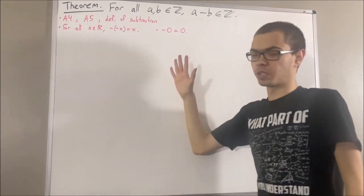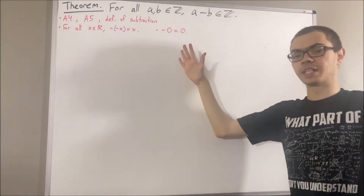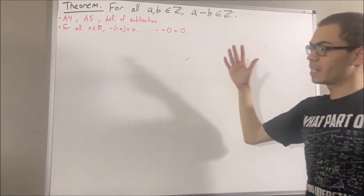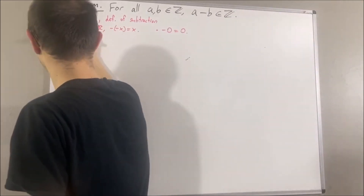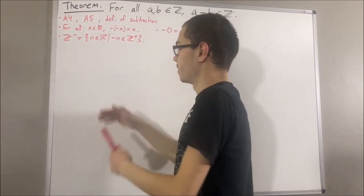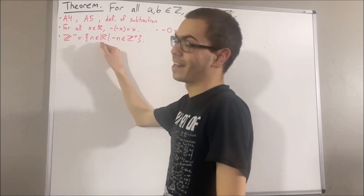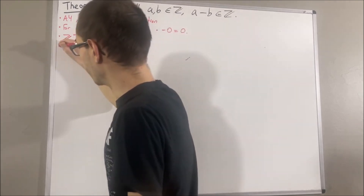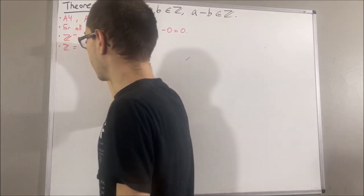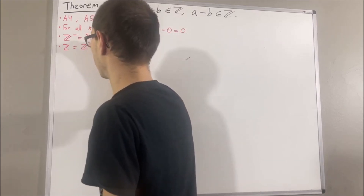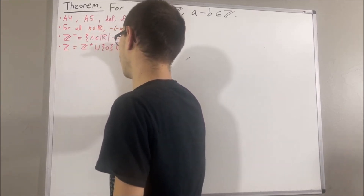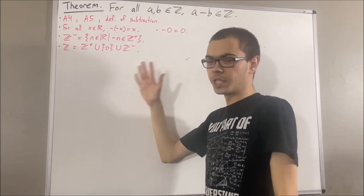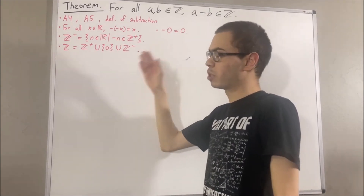In our real number system, we have defined the positive integers as a subset of the real numbers. From there, we defined the set of negative integers to be the set of real numbers n such that negative n is a positive integer. And from there, we defined the integers as the union of the set of positive integers, 0, and the set of negative integers. At this point, we have proven that for all integers a and b, a plus b is an integer.